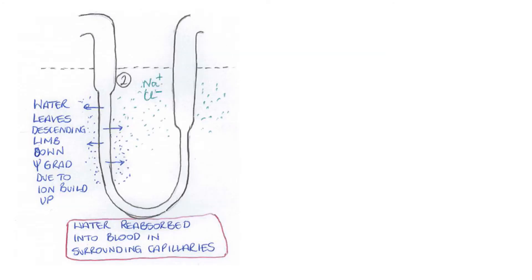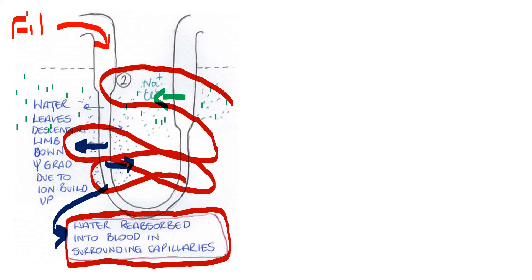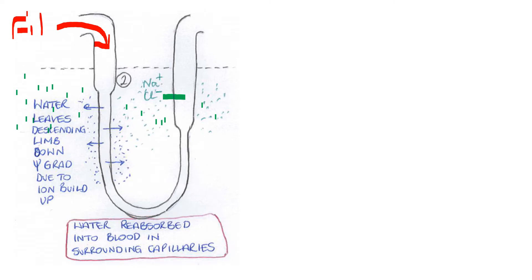On the next diagram, we've moved those ions out and they've started to build up in the tissues. Because you've started to build up this ion concentration in the tissues, water will leave the tubule - it will leave the Loop of Henle, it will leave the filtrate. What's coming around the loop is filtrate. When water leaves, it goes into the surrounding tissues and is then taken into the capillaries and back into the blood.